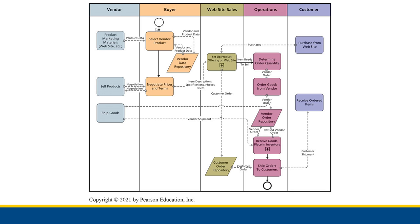Another example is the arrow from the start to select-vendor-product — this sequence flow shows that selecting a vendor product is the first activity we go to. Once we've received data from both marketing and our data repository, we select a vendor product and immediately start going into negotiation. We don't have to wait for anything else. Another example is going from receiving the goods and placing into inventory into shipping orders to customers — once our inventory is ready, we start shipping, and once we've shipped, we finish the process.